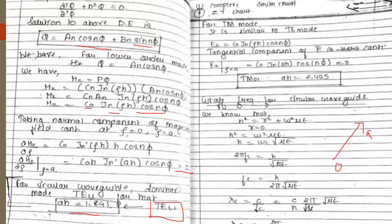Similarly for TM mode: the entire derivation holds but we write everything in terms of Ez instead of Hz. The final form is Ez equals C0 times Jn(kc*rho) times cos(n*phi). This time, instead of the normal component boundary condition, we apply the tangential component of electric field equals zero. This gives a new set of Bessel roots equal to zero, resulting in kc*a equals 2.405, corresponding to mode TM01 — the dominant mode for TM in a circular waveguide.